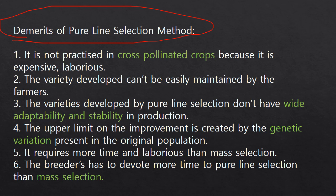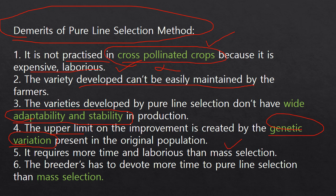The demerits of pure line selection are: it is not practiced in cross-pollinated plants because it is expensive and laborious. The variety developed cannot be easily maintained by farmers, and maintenance cost is higher. Varieties developed by pure line selection don't have wide adaptability and stability. Also, a newer variety can only be created through genetic variation of the original population — you cannot get a truly new variety without genetic variation or mutation. It is also more time-consuming and laborious than mass selection.